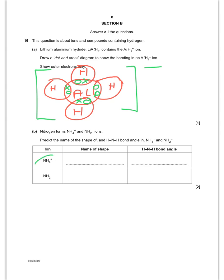Right, predicting some shapes now. Now NH4 plus, that's going to be like methane. It's going to be tetrahedral in shape. And you're going to have a bond angle of 109.5. NH2 minus, that's going to be like water. So it's going to be non-linear. And therefore your bond angle is going to be 104.5.